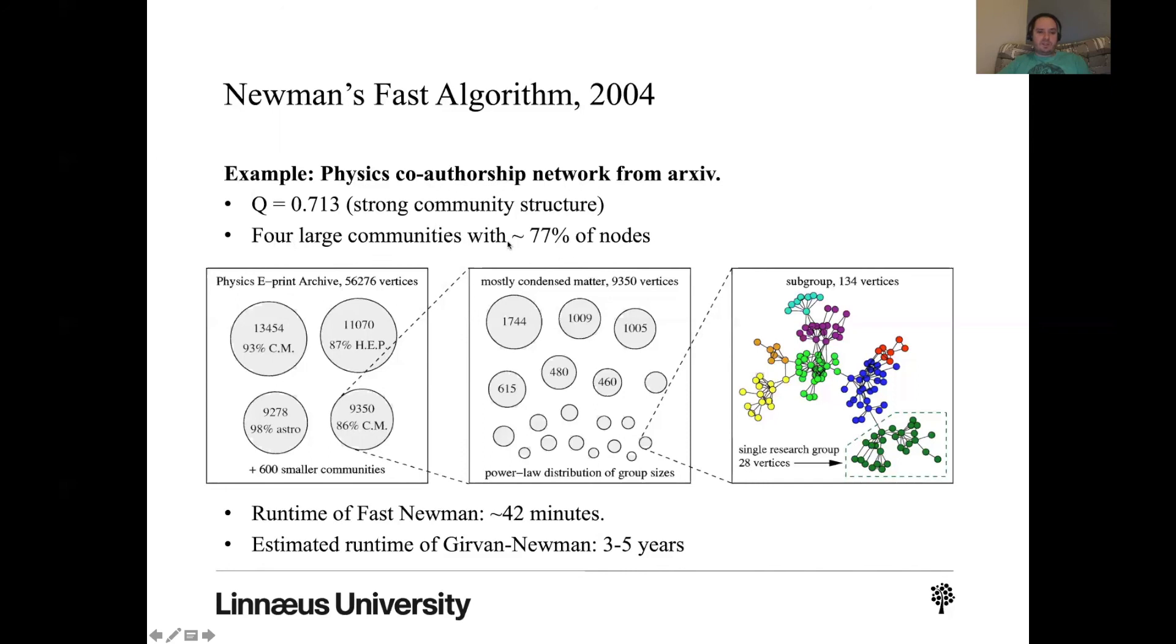And there are four large communities with around 77% of the nodes. And these are this, these communities on condensed matter, high energy physics, astrophysics. And this one is also condensed matter, but let's say in a slightly different subject, plus 600 other smaller communities that they didn't really show here. So these four communities account for 77% of the nodes, which is a lot. Like it's a very strong community structure. Most of the nodes by far are within these four communities. And then there's all the rest.